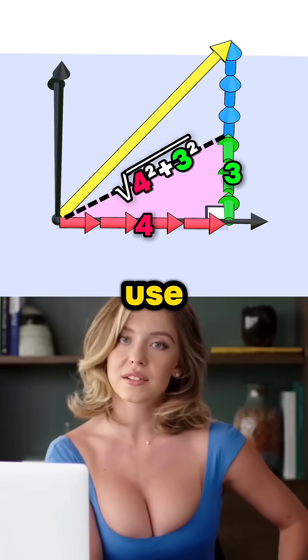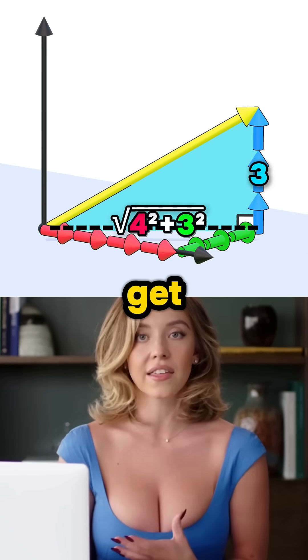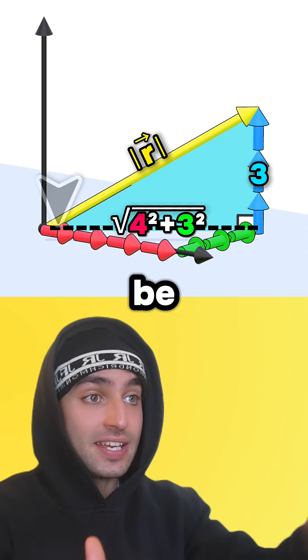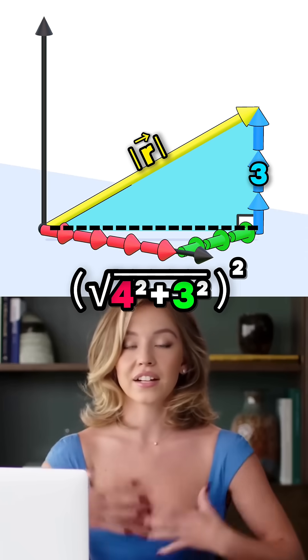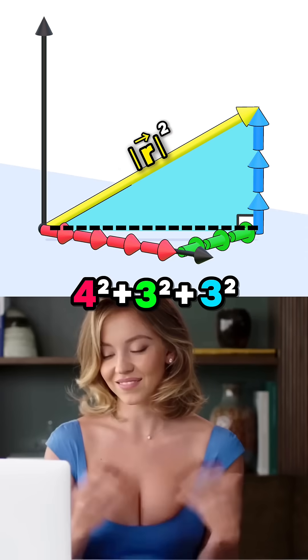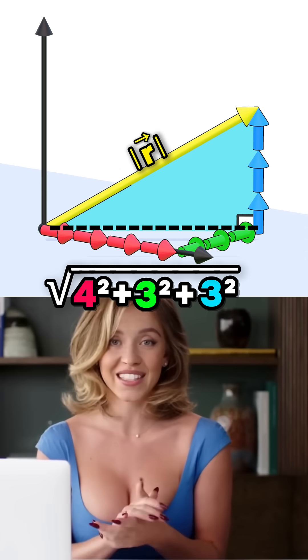Now we can use this side and do Pythagoras again to get the length of the vector. Whoa, that's clever. So now would it be this side squared? Yep, and that undoes the square root. Yep, plus this side squared equals the vector's length squared. That's right. So if we square root it, we get the vector's length.